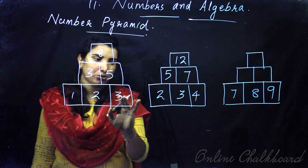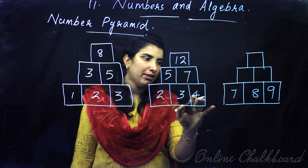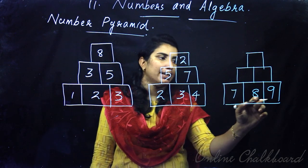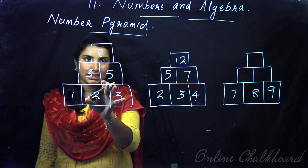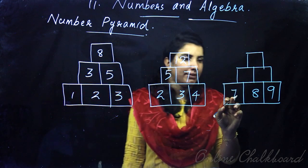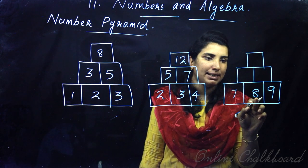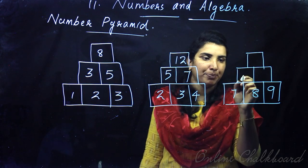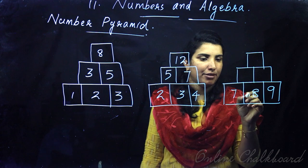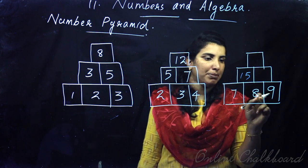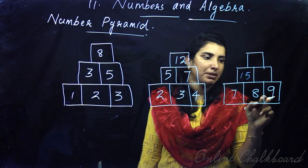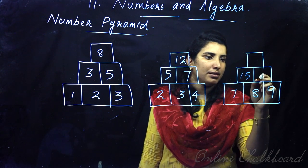1, 2, 3. 2, 3, 4. Then 7, 8, 9. 7 plus 8 is 15. Then 8 plus 9 is 17.